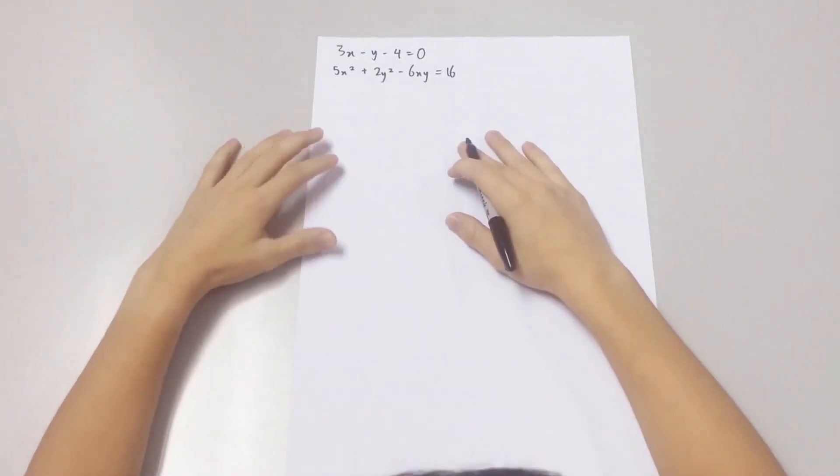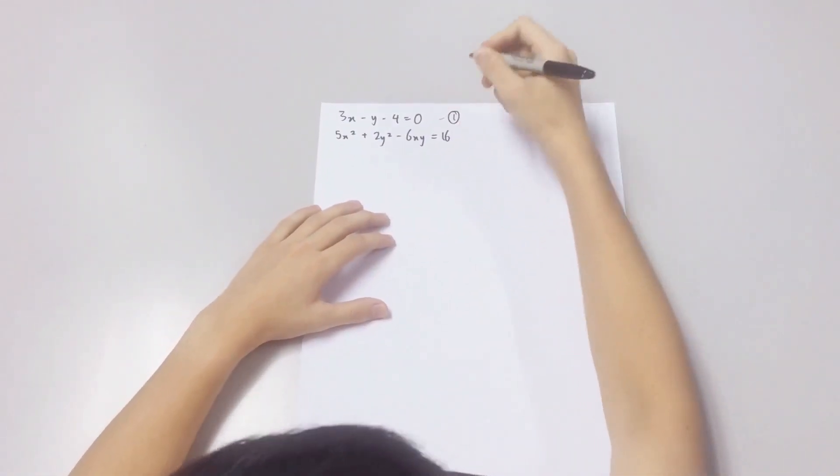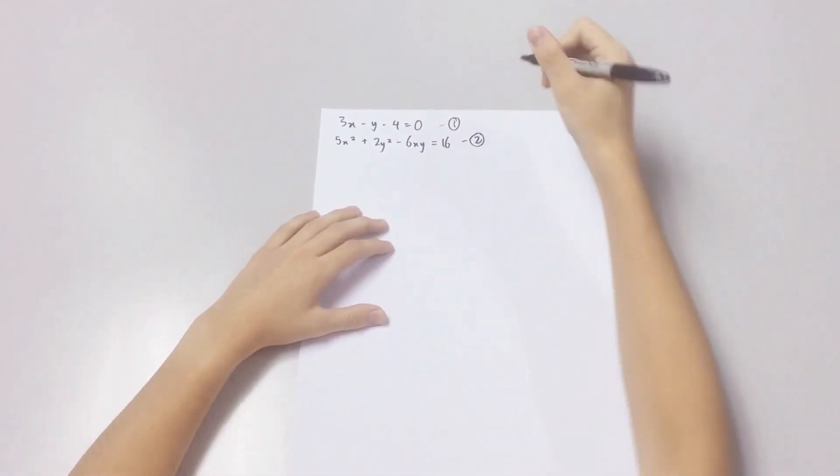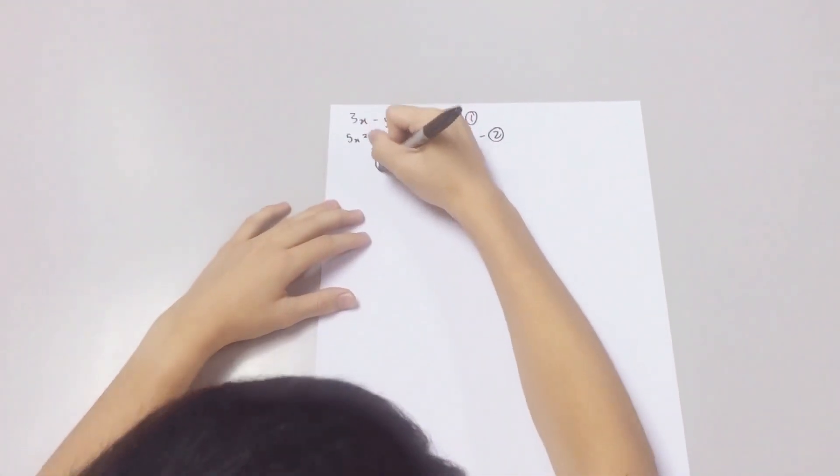These are the two equations given on the question paper. Take this equation as the first equation and take this equation as the second equation. Take y as the subject and simplify the first equation.